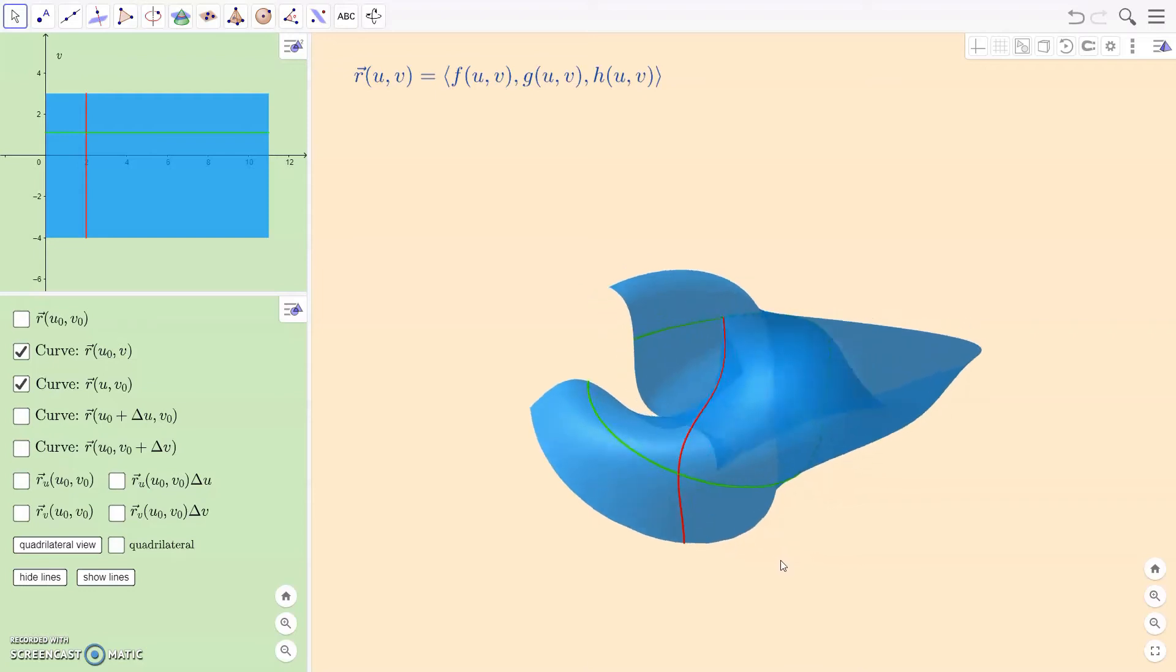Okay, because those are curves, we can use parametric curve ideas to get tangent vectors to those curves. But again, I wanted to think about cutting up this surface area into little pieces. So that requires me to take a little step forward in the U direction and in the V direction by an amount we'll call delta U and delta V, respectively.